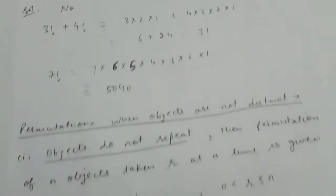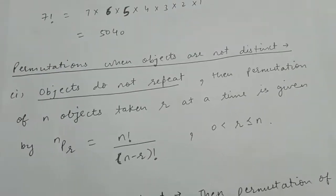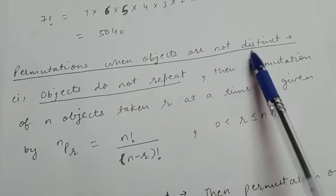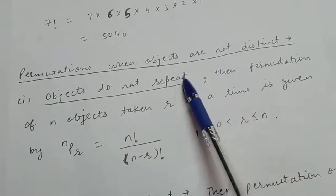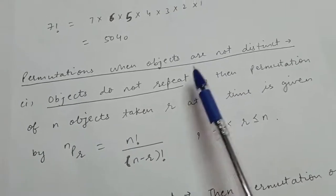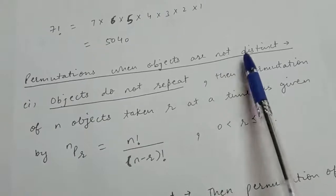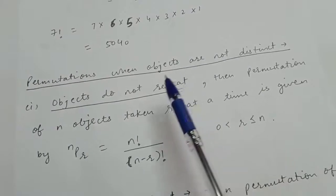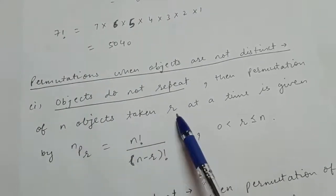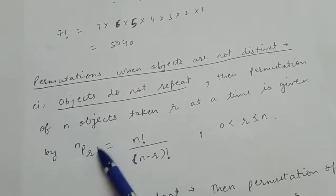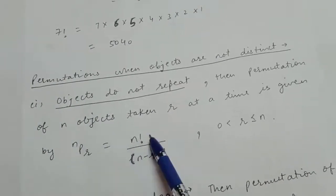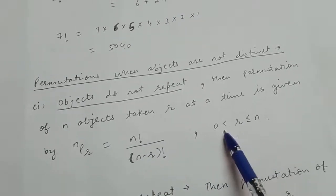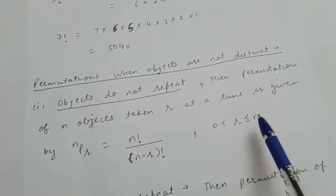Now we will discuss permutations. When objects are distinct — all given objects are different — and objects do not repeat, then the permutation of n objects taken r at a time is nPr = n! / (n−r)!. Here r goes from 1 to n.